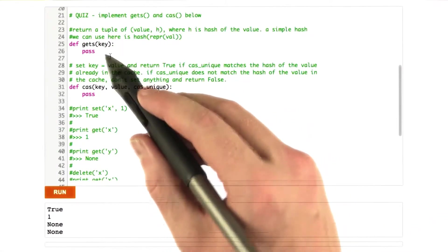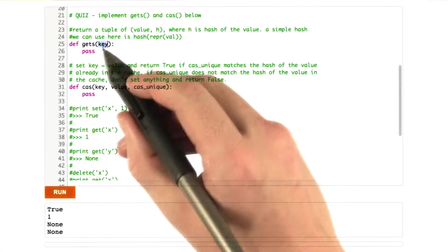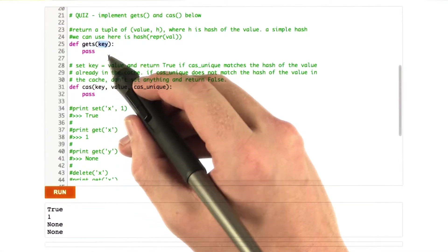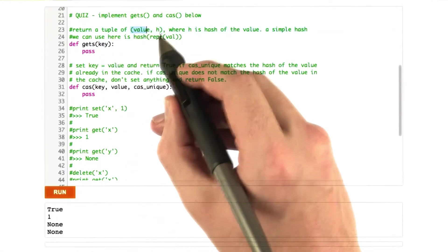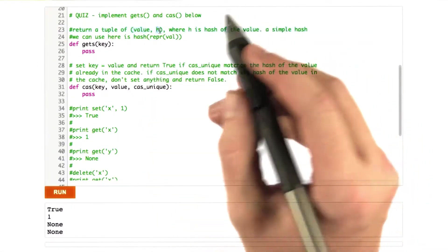What I'd like you to do is implement gets and cas. So gets takes one parameter called key, and it returns a tuple of the value stored in the cache and a hash of that value.